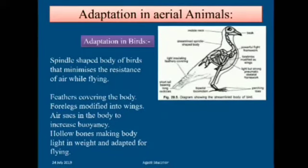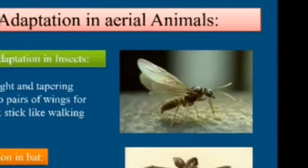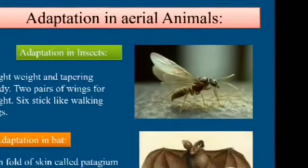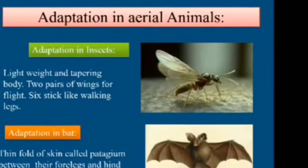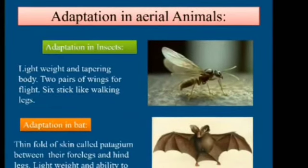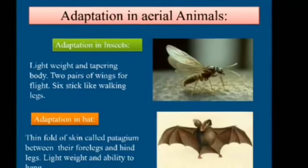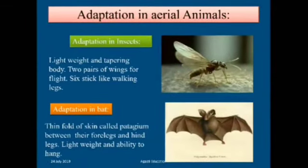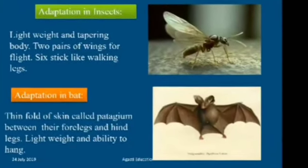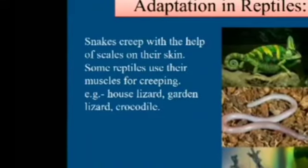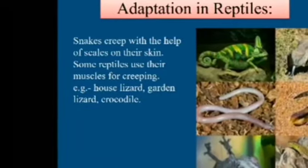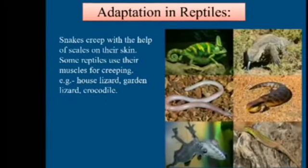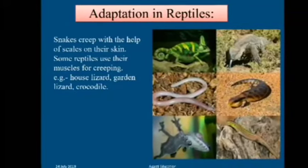In aerial animals there are also insects: lightweight and tapering body, two pairs of wings for flight, and six stick-like walking legs. Bats have a thin fold of skin called the patagium between their forelegs and hind legs; bats have very less weight and the ability to hang. Reptiles such as snakes creep with the help of scales on their skin; some reptiles use their muscles for creeping — examples include house lizard, garden lizard, and crocodile.